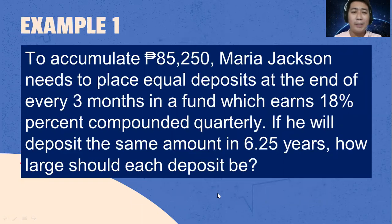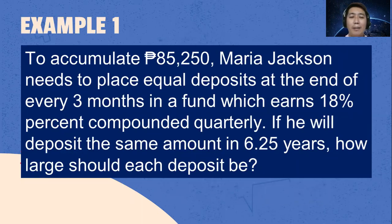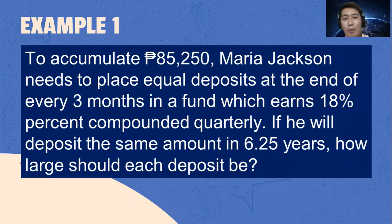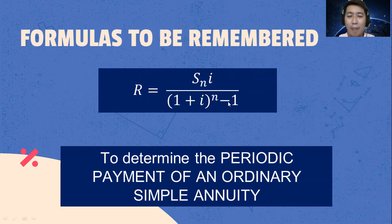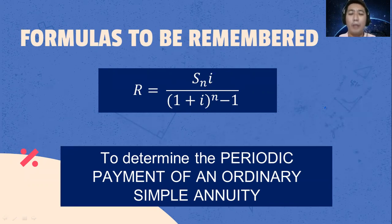Let's now try to solve this problem. To accumulate 85,250 pesos, Maria Jackson needs to place equal deposits at the end of every three months in a fund which earns 18% compounded quarterly. If she will deposit the same amount in 6.25 years, how large should each deposit be? Since the future value is given, we use R equals S sub n multiplied by i divided by the quantity of 1 plus i raised to n minus 1.